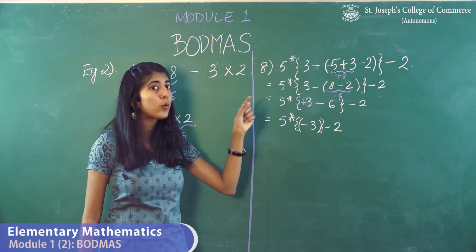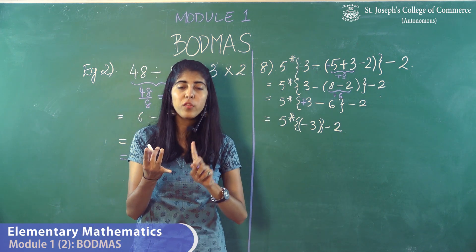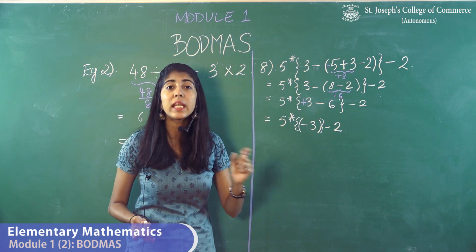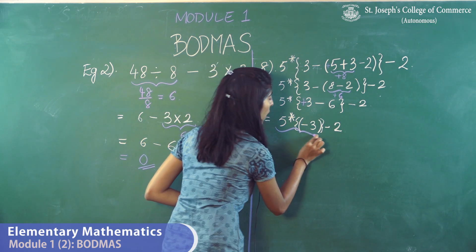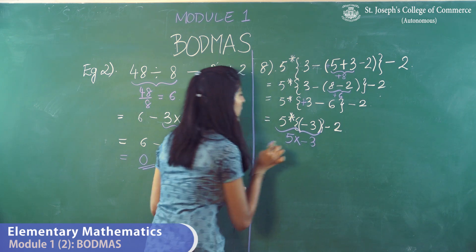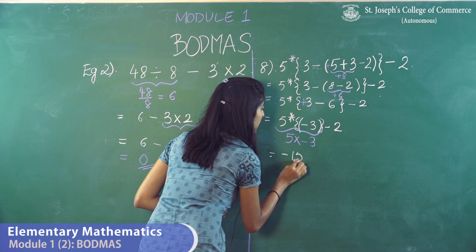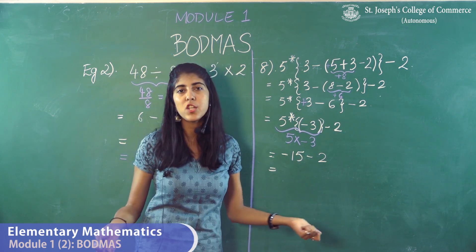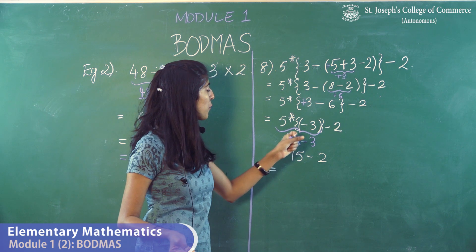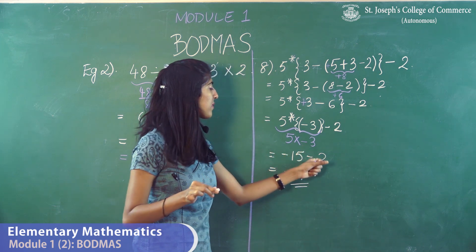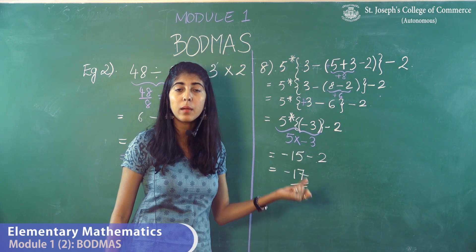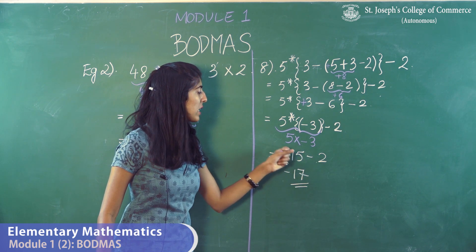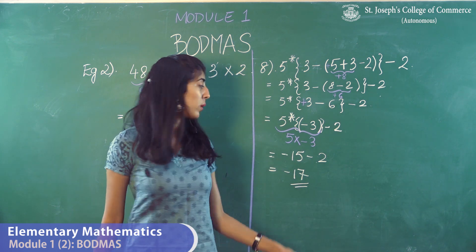After removing the brackets, there is no O and no D. So we apply M — multiply. Minus 3 is multiplied by 5, giving minus 15. Minus 15 and minus 2 remain. Both have minus signs — same signs, so we add the values and keep the minus: minus 15 minus 2 gives minus 17.